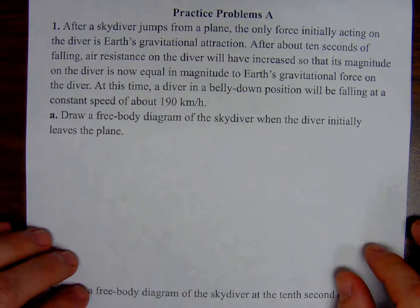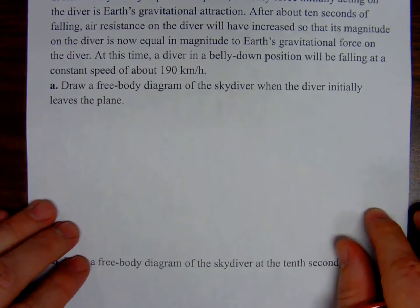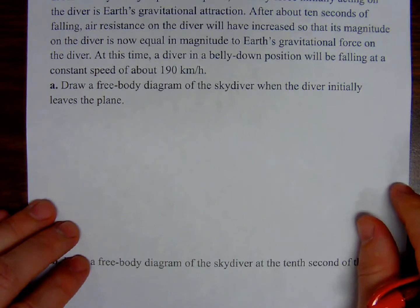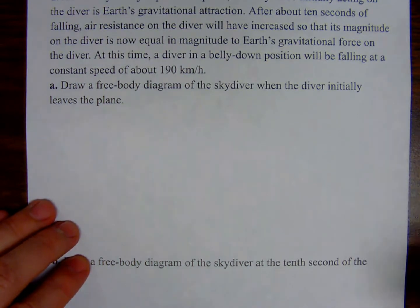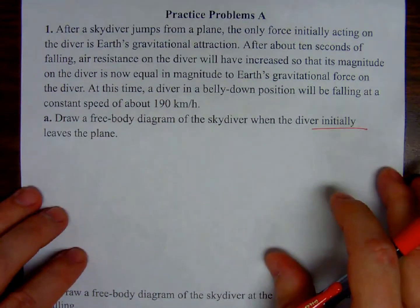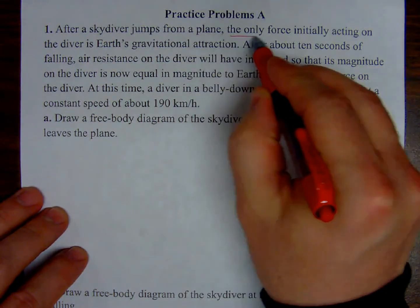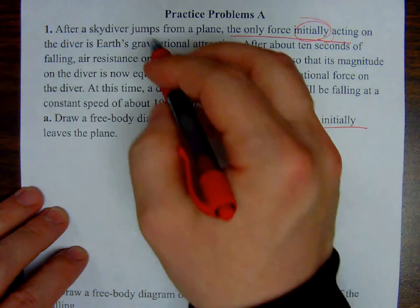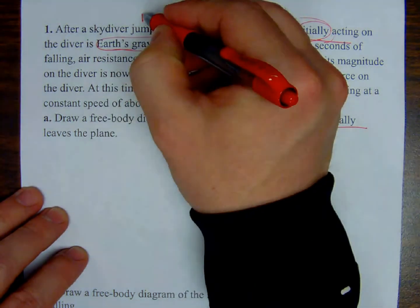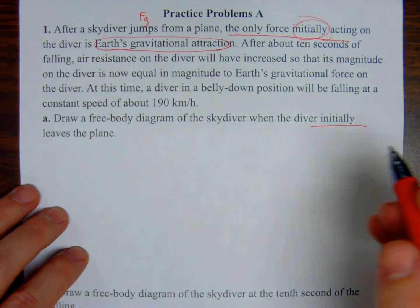We'll do that in just a moment. Part A, draw a free body diagram of the skydiver when the diver initially leaves the plane. Initially. Now, the reason that is important is because in the problem, it tells us that the only force initially acting on the diver is Earth's gravitational attraction. We can represent that with F sub G. Easy enough. So when we talk about the diver initially leaving the plane, we're only talking about F sub G.